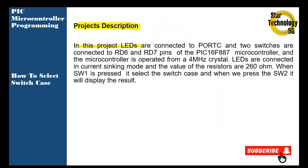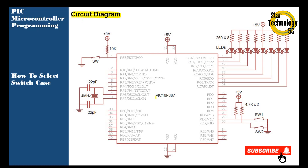In this project, LEDs are connected to Port C and two switches are connected to RD6 and RD7 pins of the PIC16F887 microcontroller. The microcontroller is operated from a 4 MHz crystal. LEDs are connected in current sinking mode and the value of the resistors is 260 ohm. When switch one is pressed it selects the switch case, and when we press switch two it will display the result.